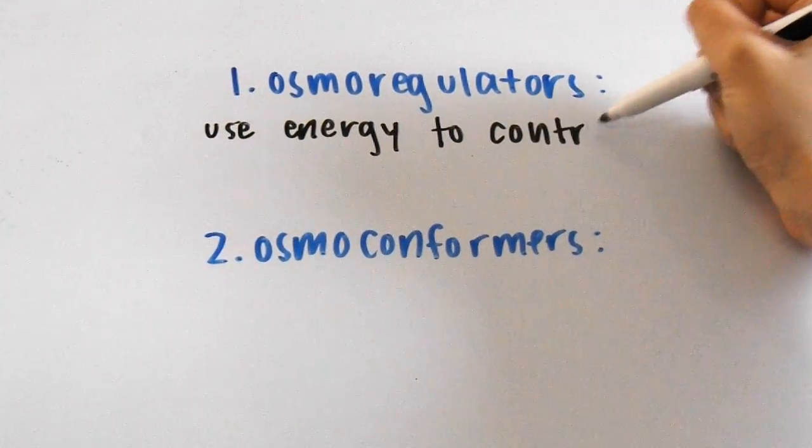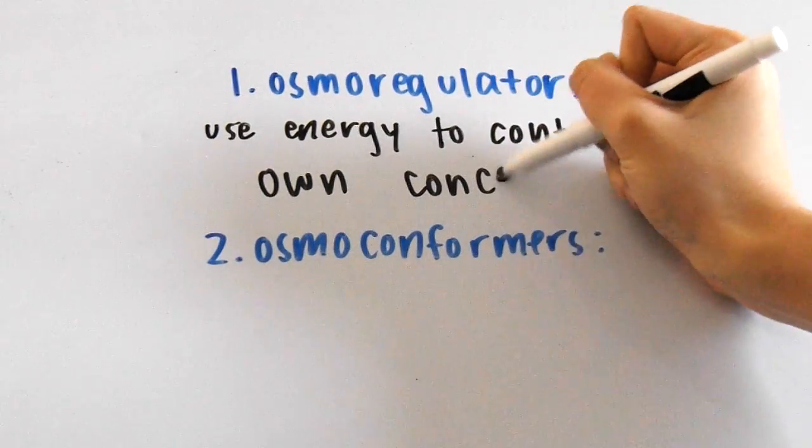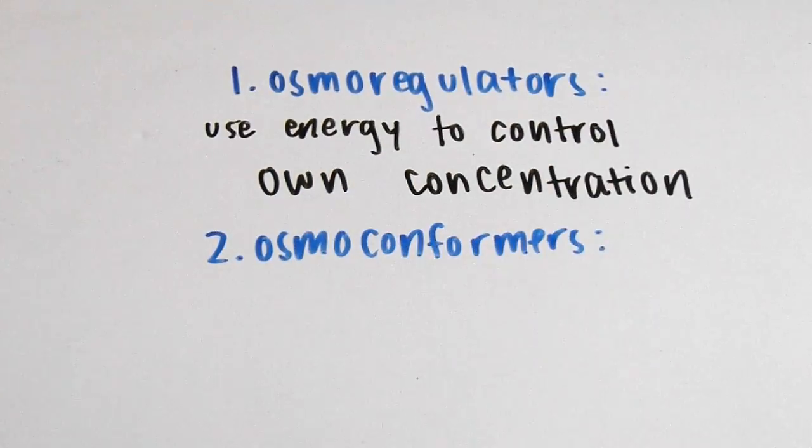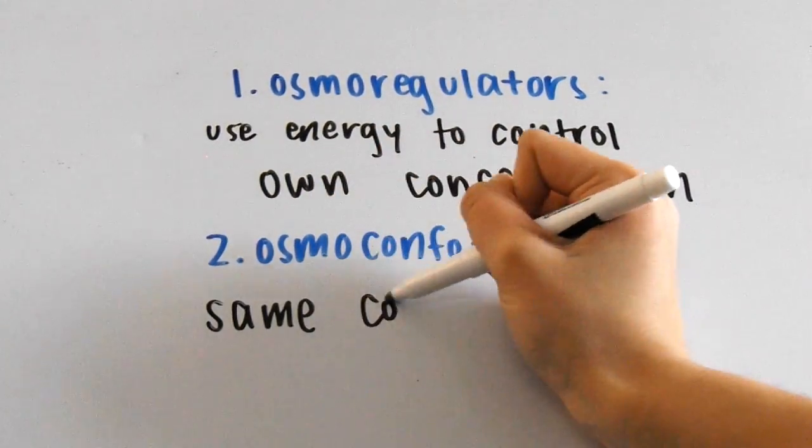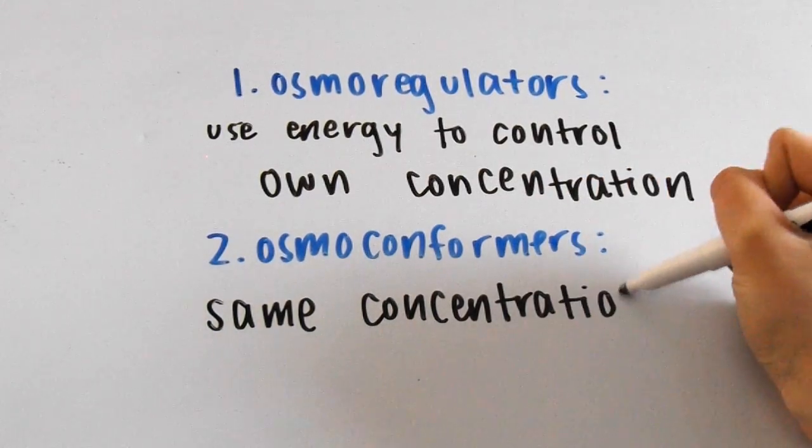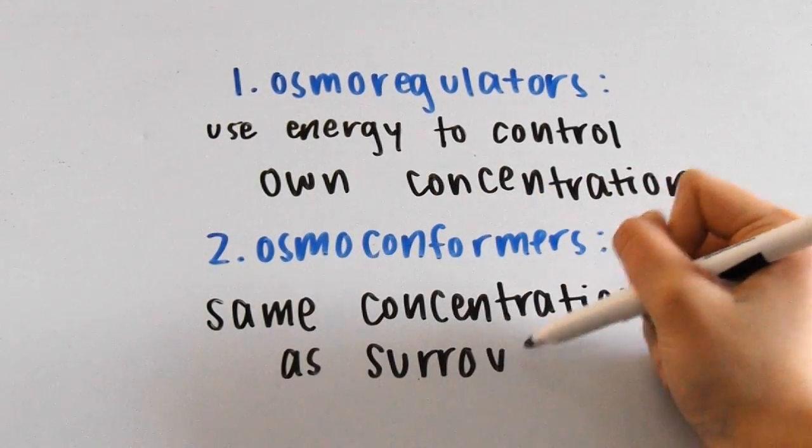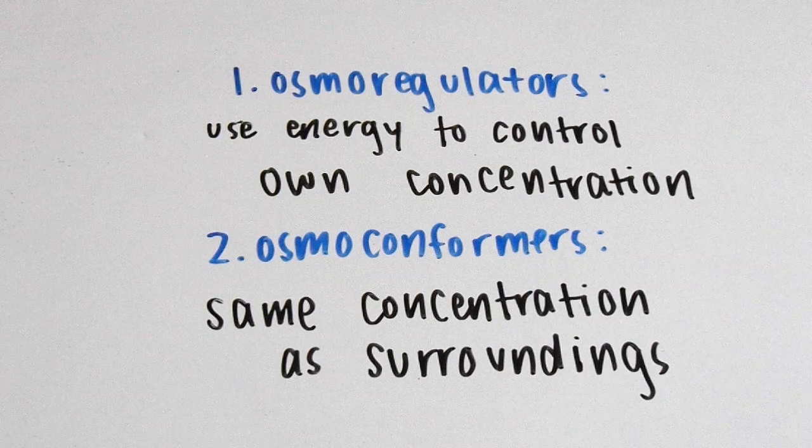There are two types of animals when it comes to osmoregulation: osmoregulators and osmoconformers. Osmoregulators need to use up energy to control their internal solute concentrations, while osmoconformers are isoosmotic with the environment.